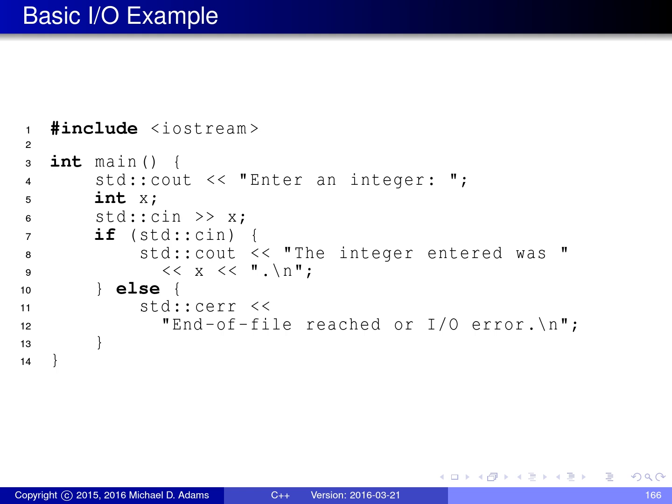On this slide we have an example illustrating very basic usage of IO streams in the standard library. This program prompts the user to enter an integer by writing a message to standard output, reads the integer from standard input, and then either prints the integer that was read or prints an error message to standard error. The first thing we do is include the iostream header file, which has all the key definitions for IO streams.